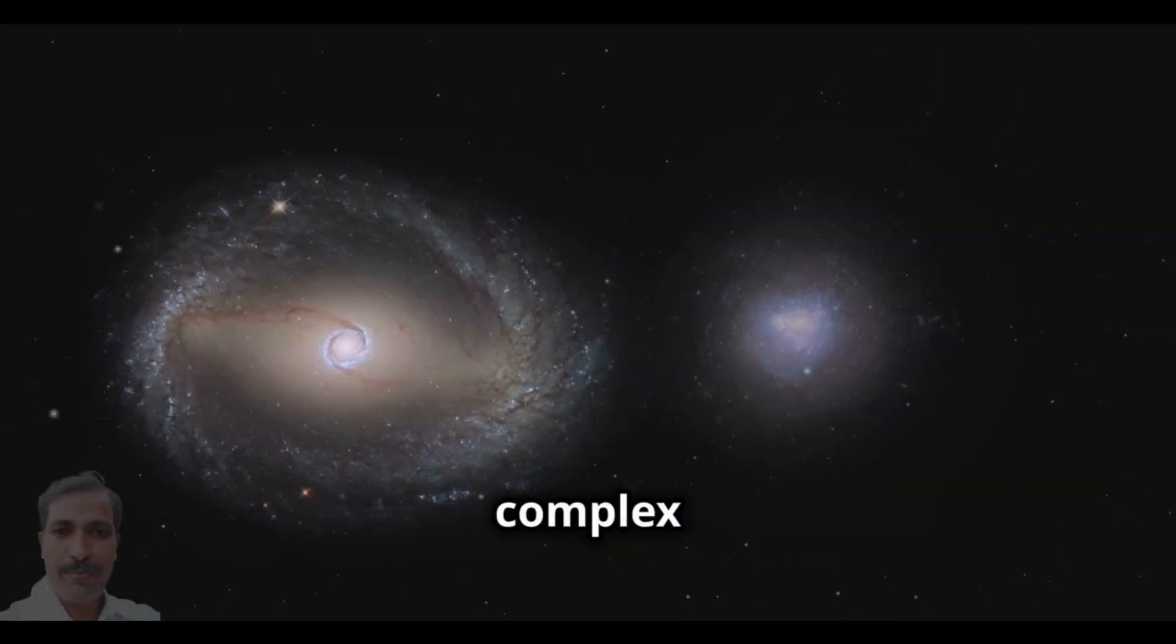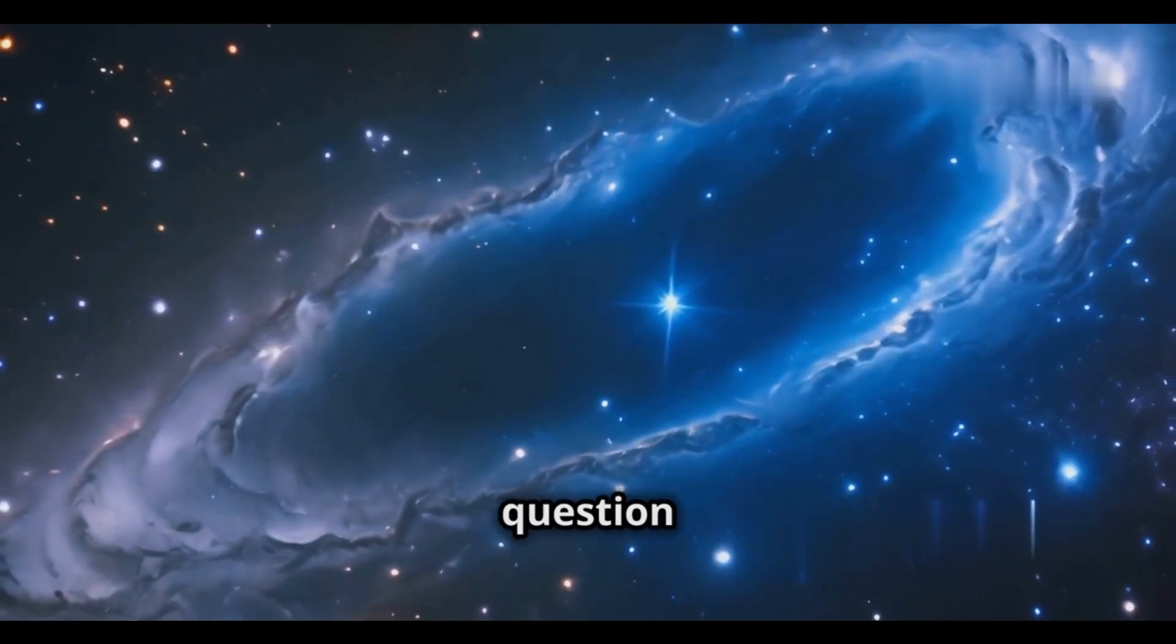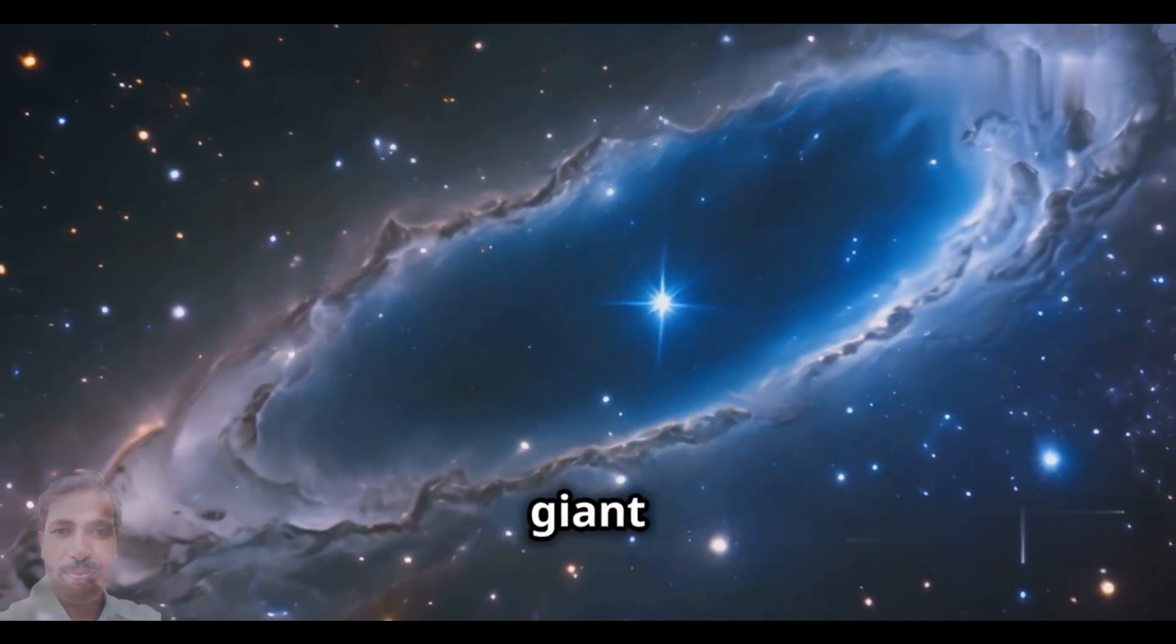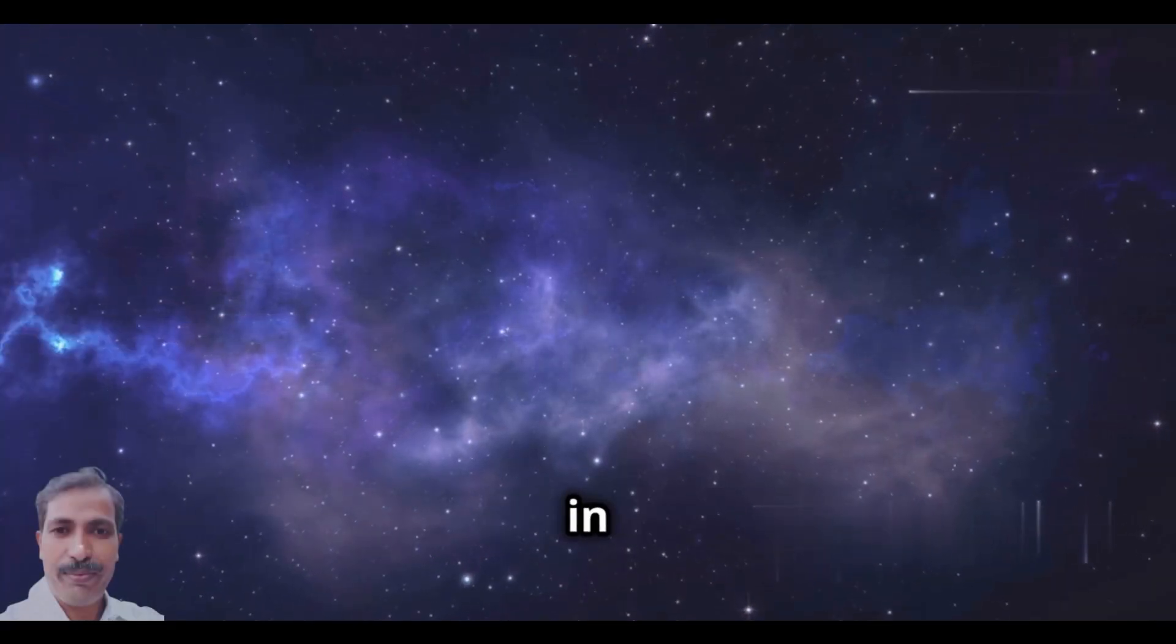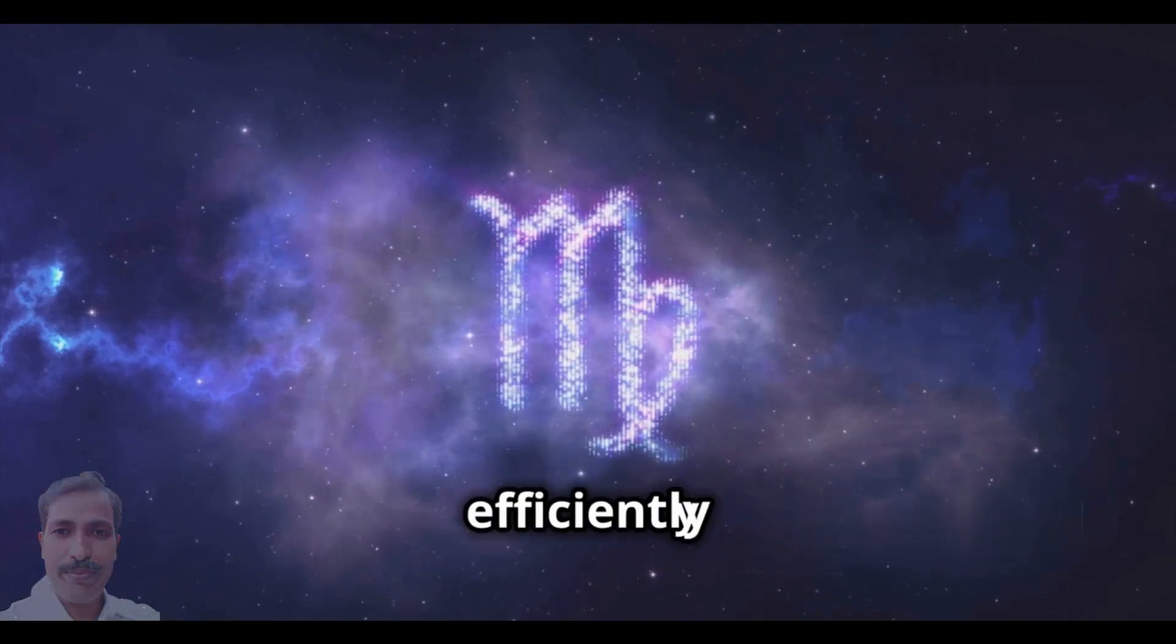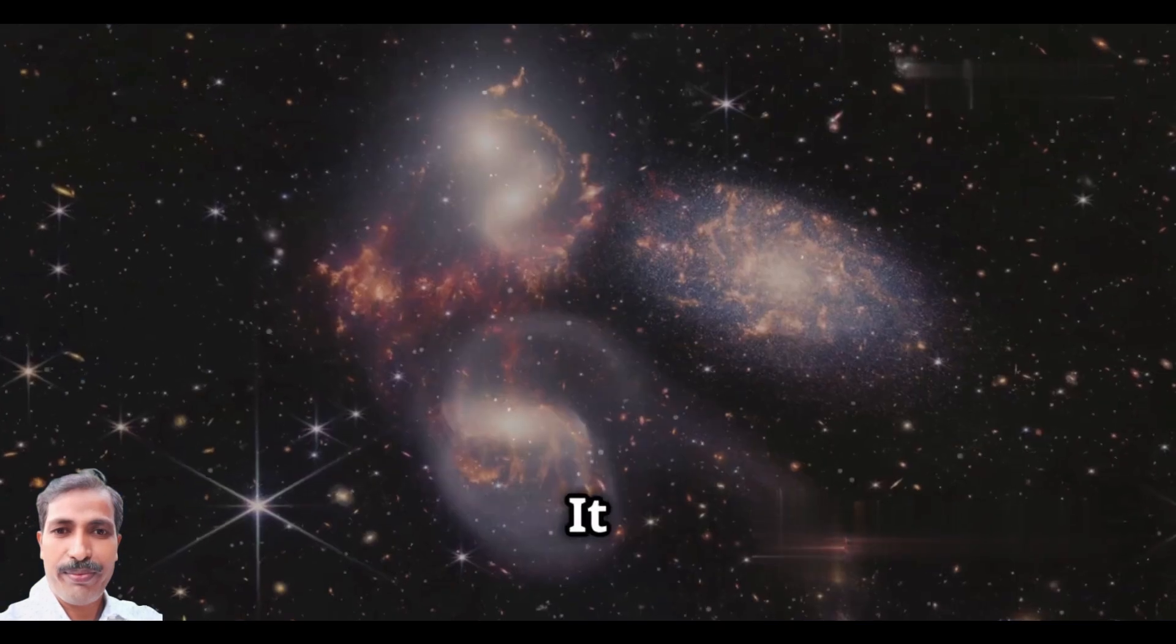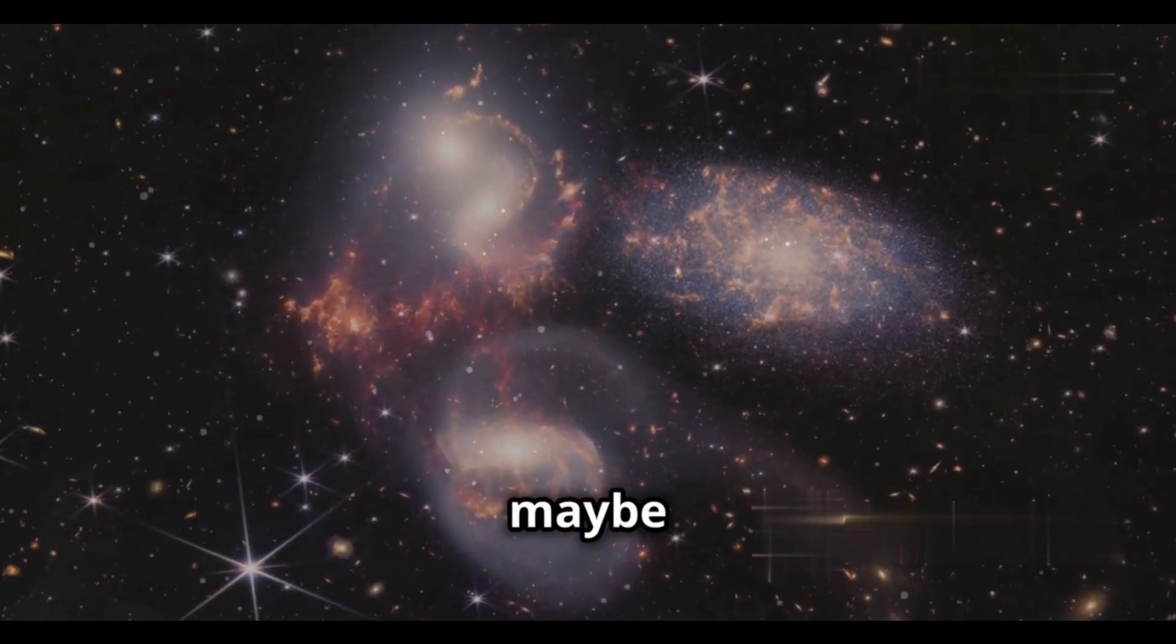How could such big and complex galaxies exist so early in the universe's history? The discovery made us ask a big question. What were these early giant galaxies made from? The existence of these mature galaxies in the young universe suggested that galaxies formed much faster and more efficiently than we first thought. It suggested that what we knew about the early universe was incomplete, maybe even wrong.